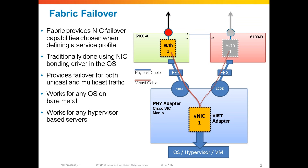Should anything fail along this path — including the uplink, the uplink port, the Fabric Interconnect switch 6100A, the ports, the fabric extender, or the physical port on the physical adapter — if anything should fail along that path, we will engage a Fabric Failover event and quickly move that virtual cable over to Fabric B and to an identical virtual ethernet port on Fabric B, and pin it up a new uplink on Fabric B.